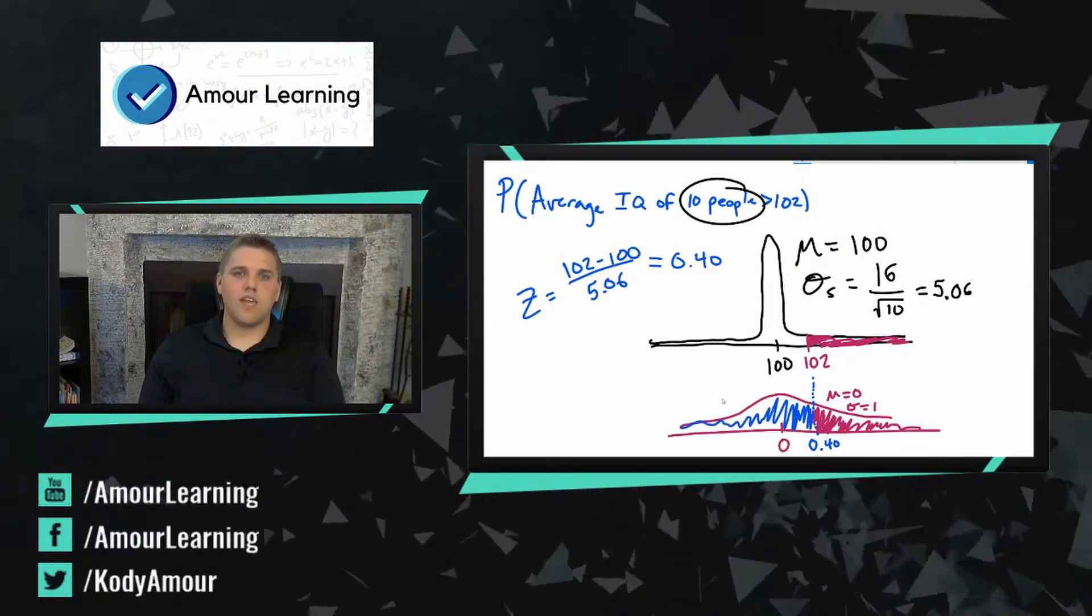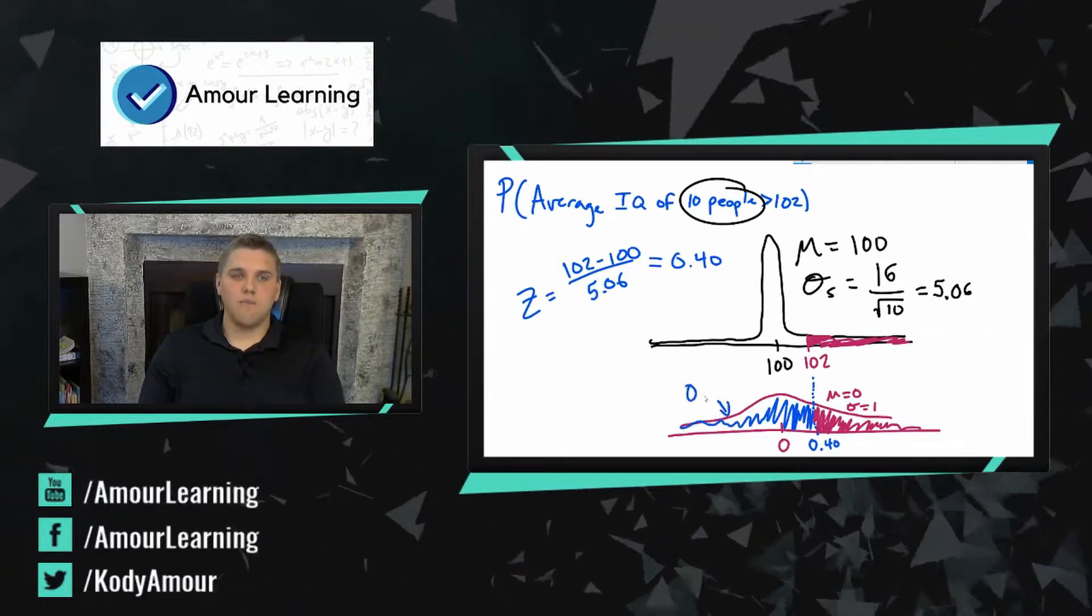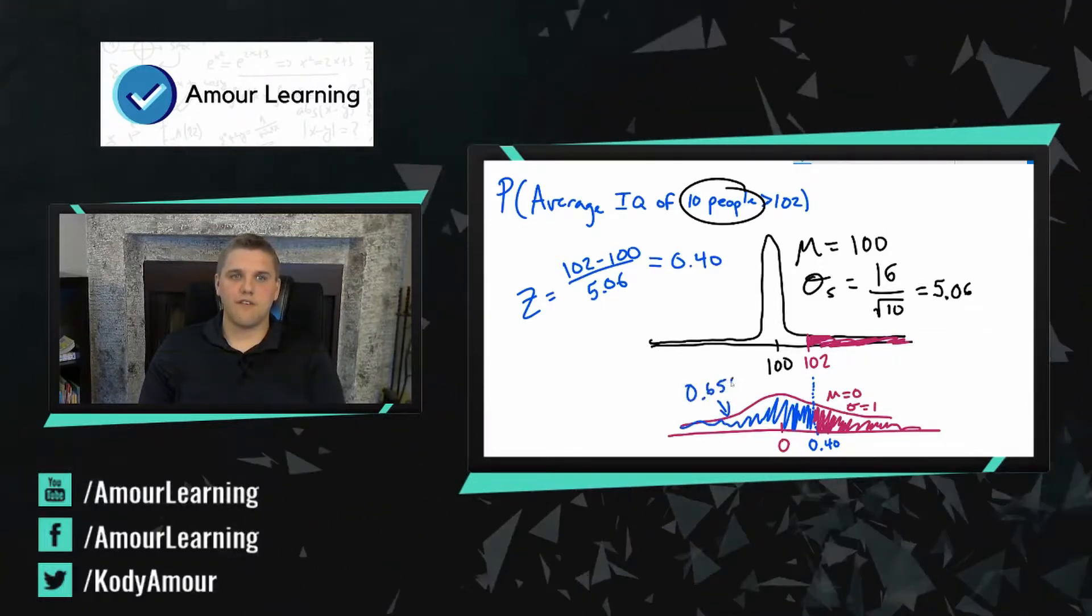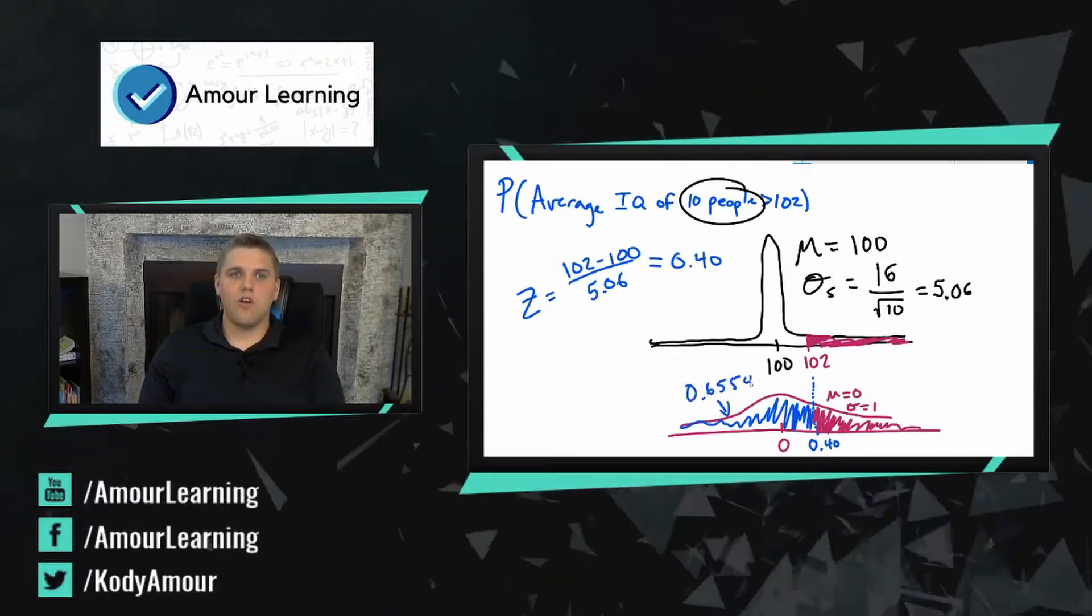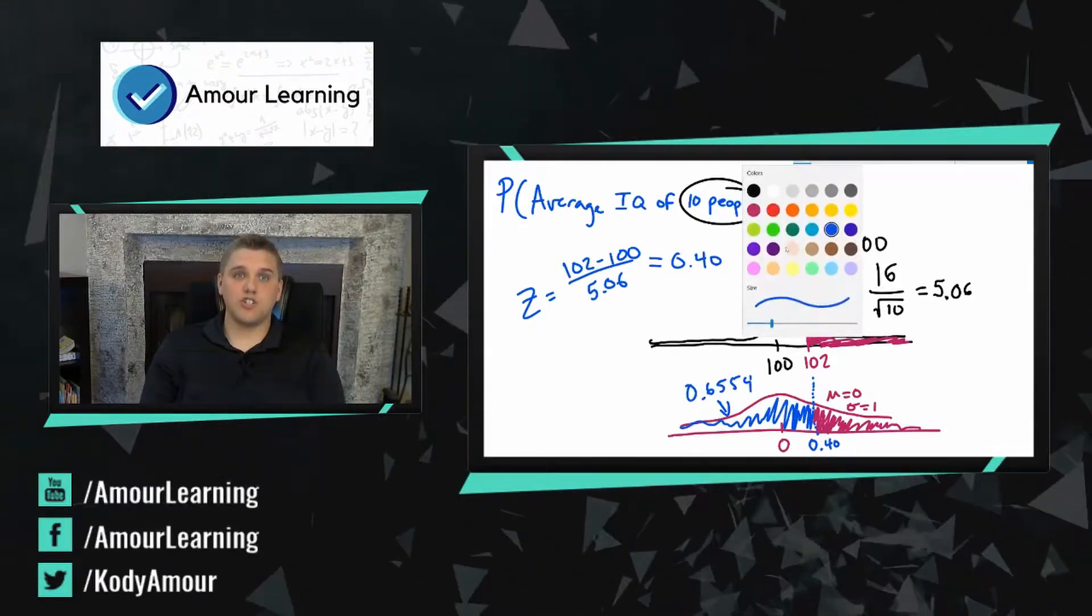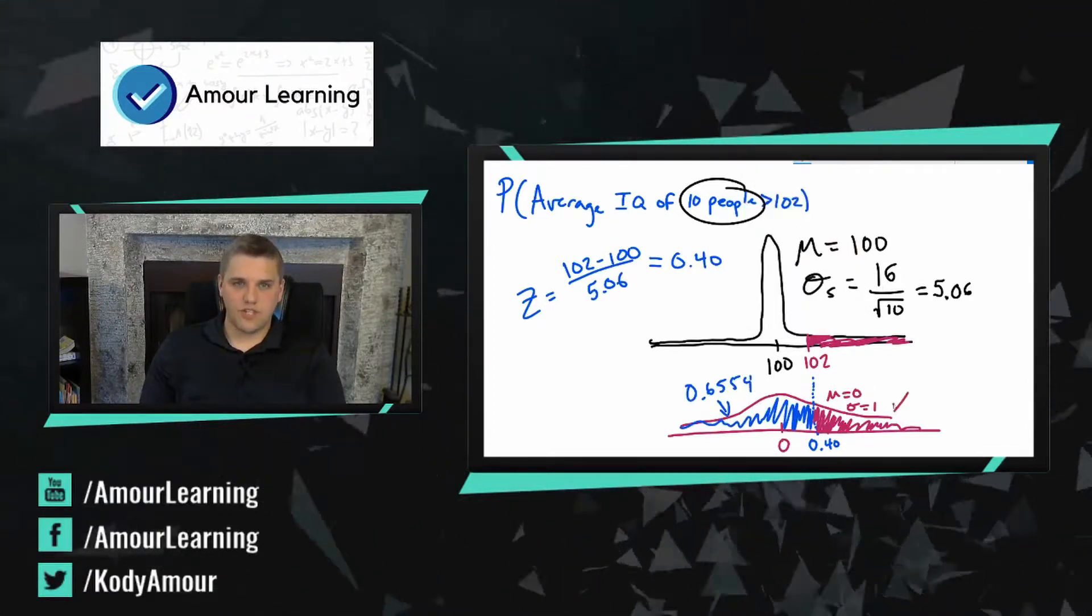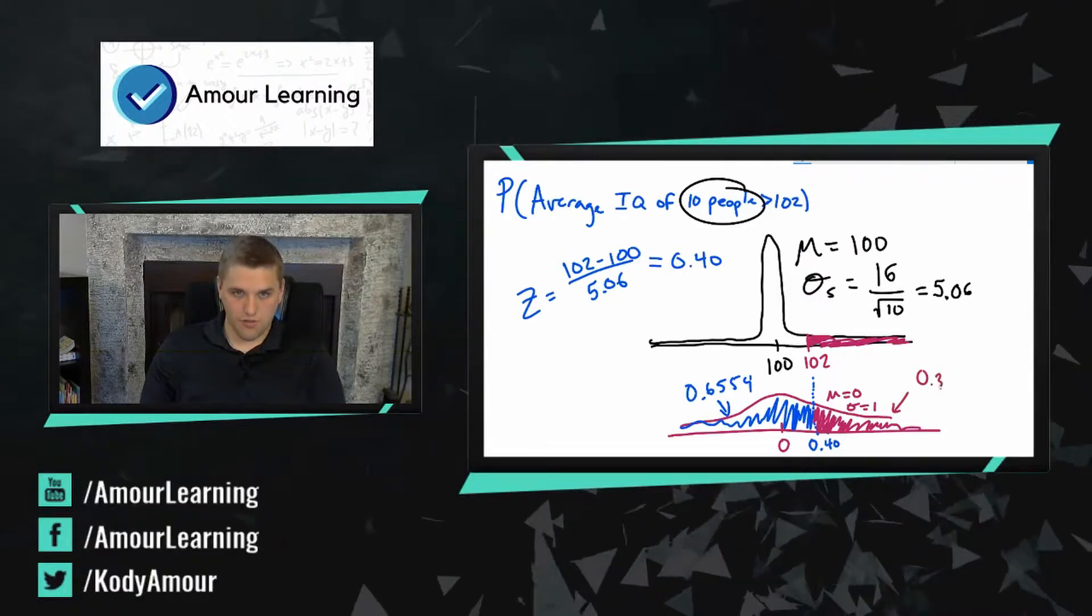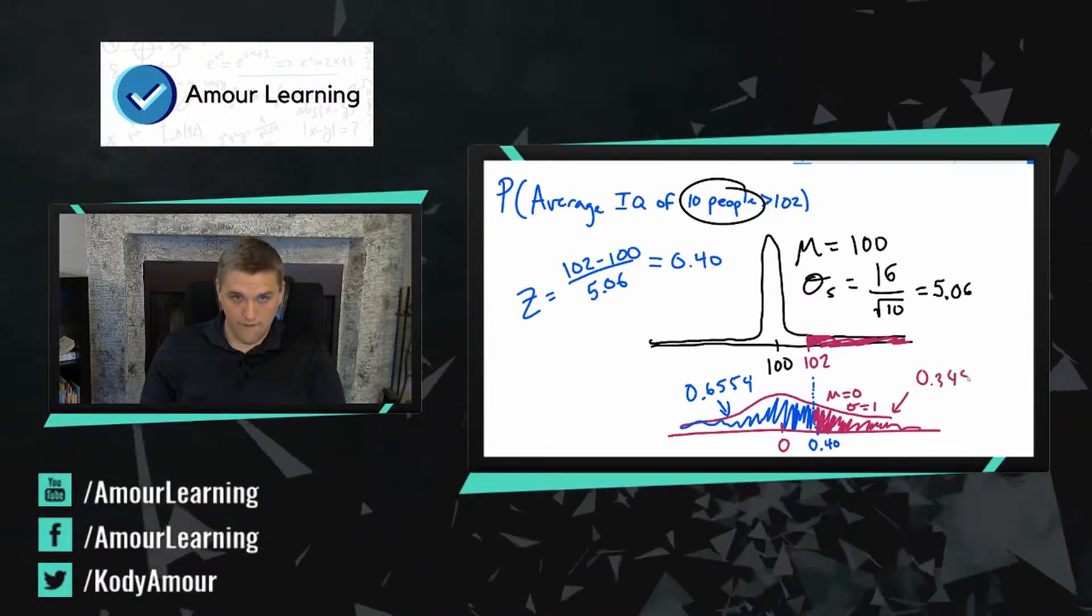This area right here, the area to the left is 0.6554, which means that this purple region is just everything left over. This purple region would be 0.3446.